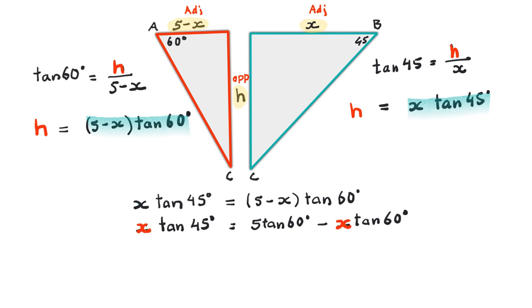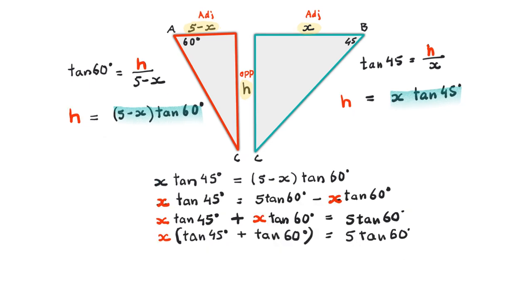So to do that I would bring the X variable together on one side. And now that I have the X values on one side I will factorize the X out. Now we need to find X because we need to find the value of X which is up here and that's the length of that side. Rearrange that one more time. So X is equal to 5 tan 60 and we divide it by tan 45.